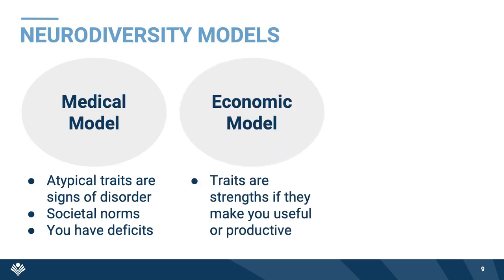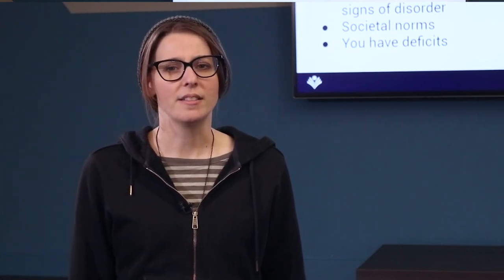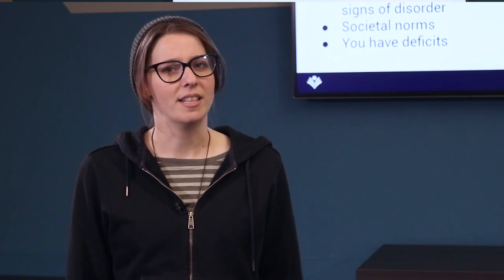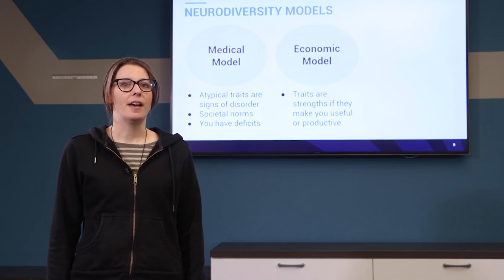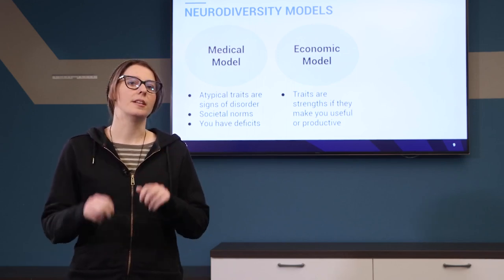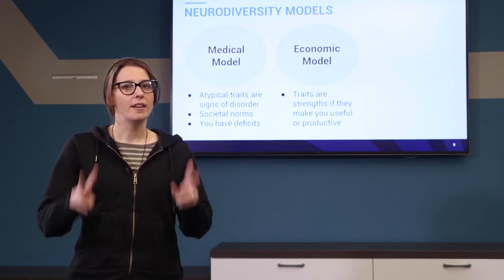Another model that many people use is the economic model. Under this model, instead of valuing people based on how normal or typical they are, value is strictly based on productivity. For example, you may hear someone say that the unemployment rate for autistic people is as high as 90% because autistic people lack the soft skills to make it in the workplace. Or you may hear something that sounds positive, like companies should hire more autistic job applicants because they are actually good at math. But both of these models are flawed because they put a value on people based on how they compare to a typical person, based on values important to a typical person, in a society designed for a typical person.